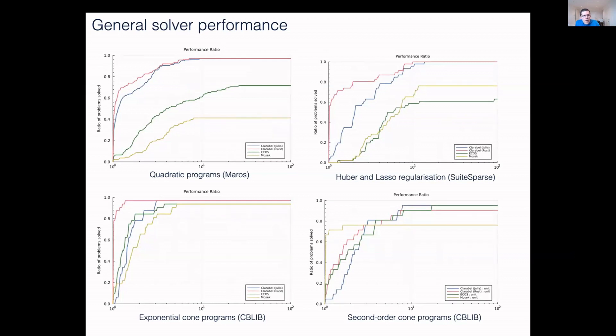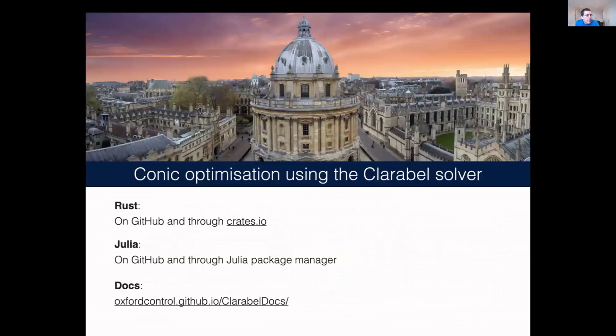I think I'm out of time. There's links to all of our stuff. You can just type in Clarabel solver into Google, and you can get it in Rust and Julia. We also have extensive documentation on that final documentation page. I'm happy to answer questions in the chat after. Thanks.